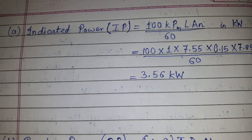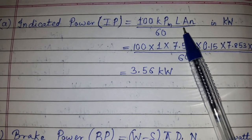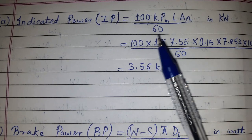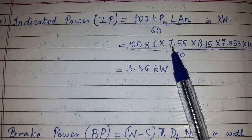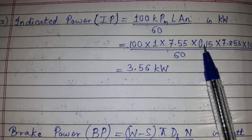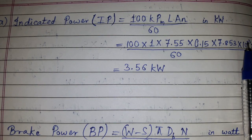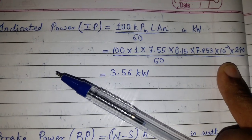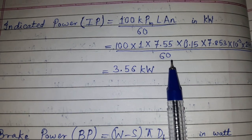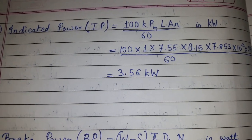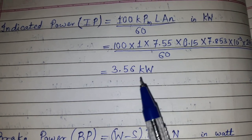Now we calculate indicated power using the formula: IP = (100 × k × PM × L × A × n) / 60, in kilowatts. Substituting: k = 1, PM = 7.55 bar, L = 0.15 m, A = 7.853 × 10⁻³ m², and n = N/2 = 240 (4-stroke). The indicated power works out to 3.56 kW.